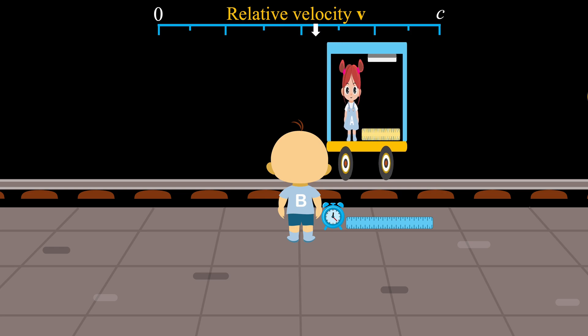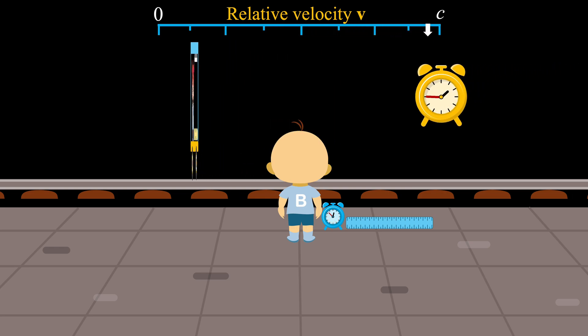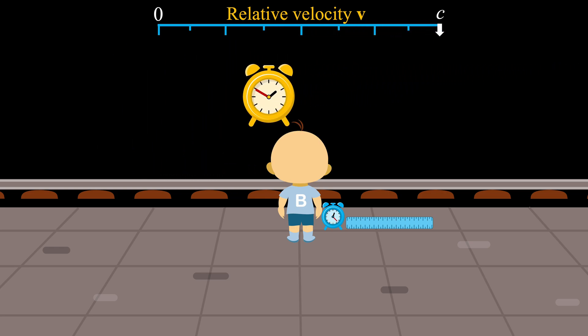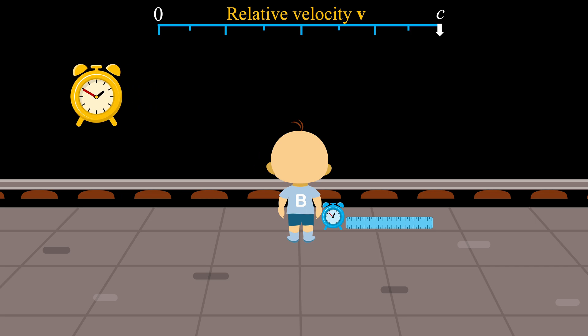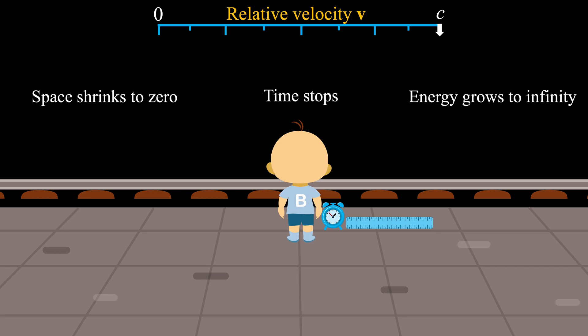In summary, a universal speed limit exists because time slows to a stop, space contracts to zero size, and energy becomes infinite when something approaches the speed of light. These pathological effects make it fundamentally impossible for a massive object to reach the speed of light.